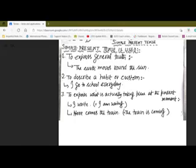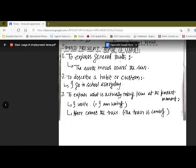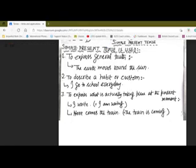One is to express general truth. The earth moves around the sun, or you can also say that Sumansar kills a tiger. To describe a habit or custom: I go to school every day. This is habitual truth.